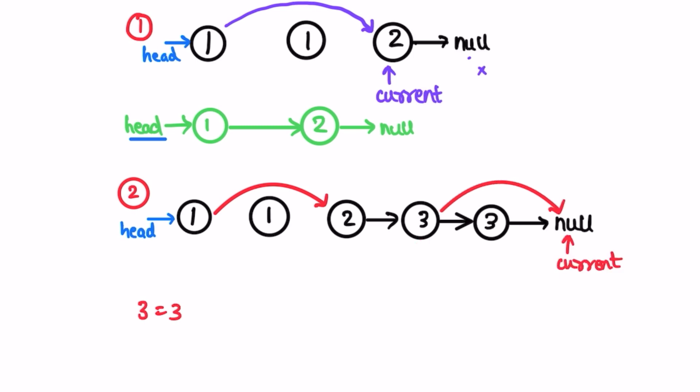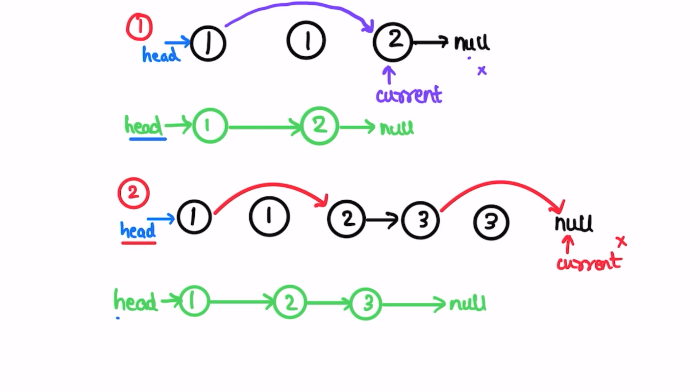Current is now pointing to null so we end the iteration. Finally we return the head of the linked list — our output will look like this, and we return the head of the linked list.